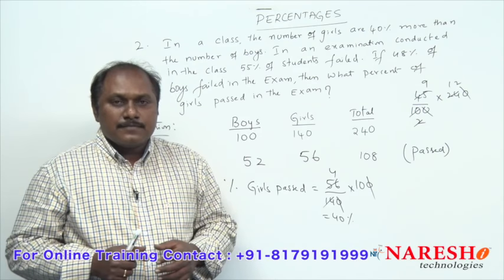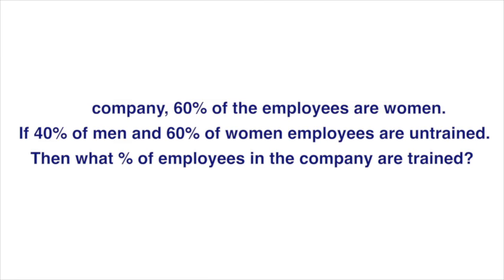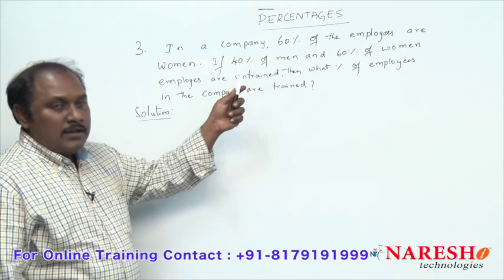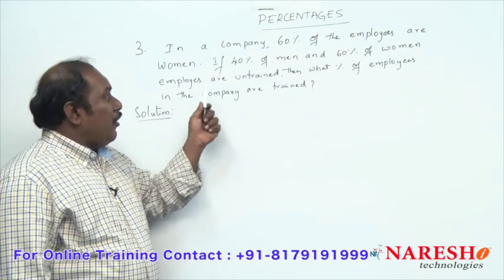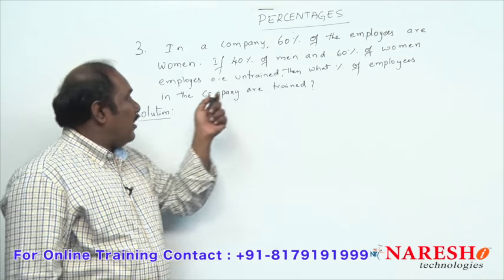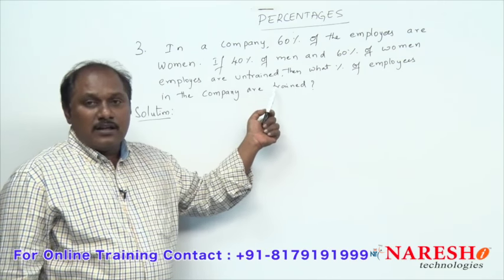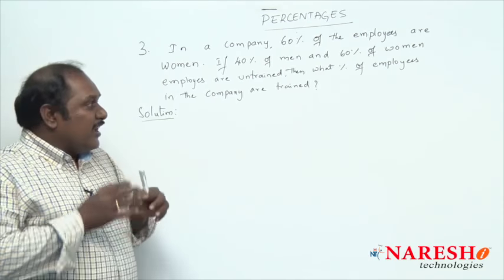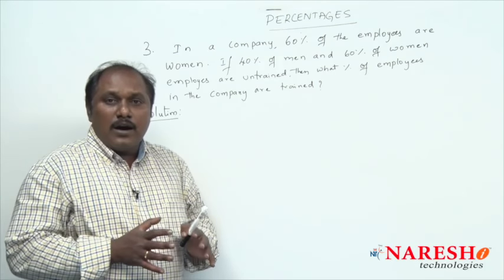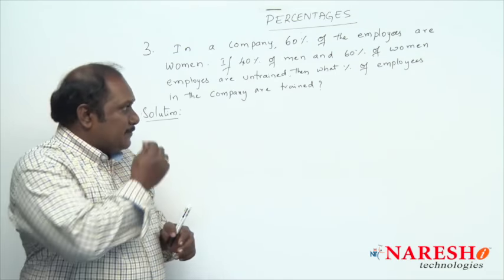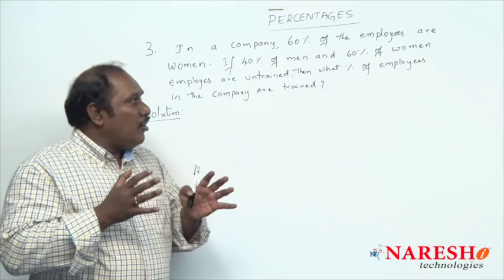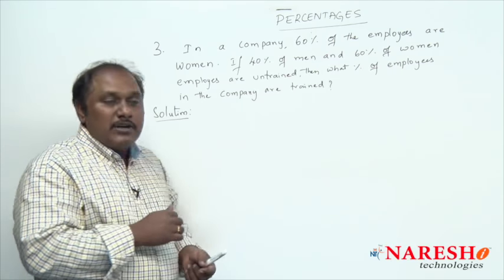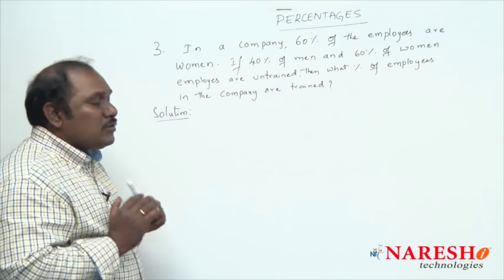Now let us look into the third question. In a company, 60 percent of the employees are women. If 40 percent of men and 60 percent of women employees are untrained, then what percent of employees in the company are trained? The information given is all in percentage, so how to solve this problem in a very simple way?